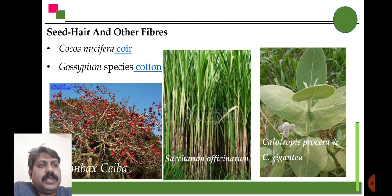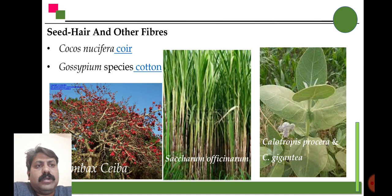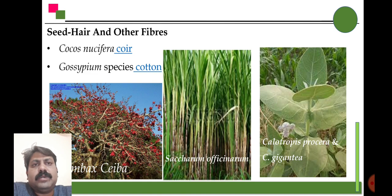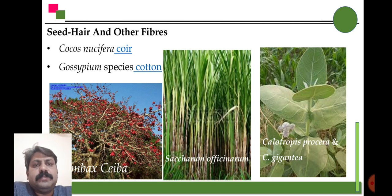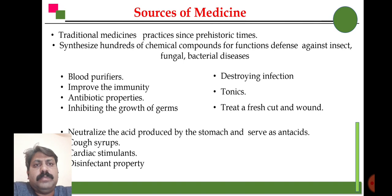Calotropis procera, commonly called Rui, is also a source of fiber. Cocos nucifera — that is coir — is also used to make fiber material. The Gossypium species — that is cotton — is the most important source of fiber.